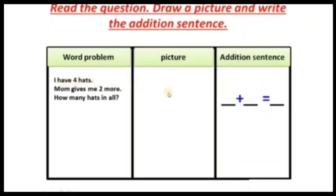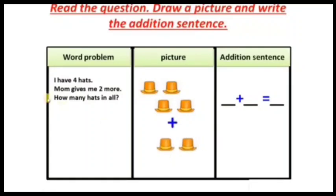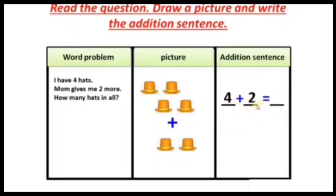I have four hats — draw four hats. Mom gives me two more hats — draw two more hats and add them. How many hats in all? Count the total. Four and two more hats adding: four plus two equals — one, two, three, four, five, six — six. Total hats: four plus two equals six. Draw the picture and write the addition sentence.